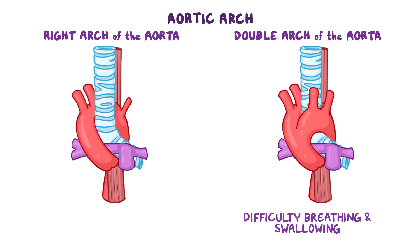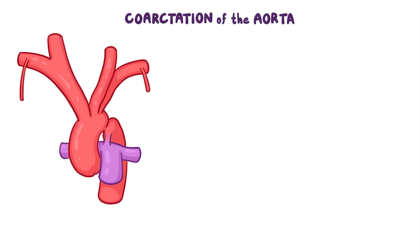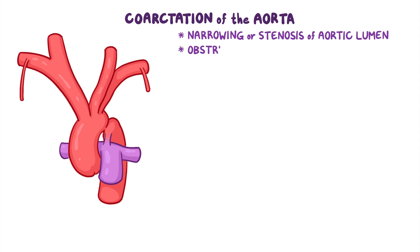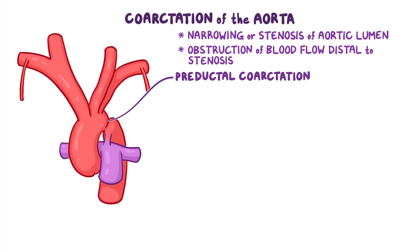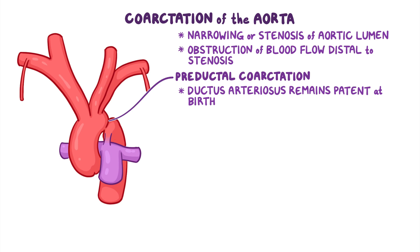The aorta can also be subject to coarctation of the aorta, which is when the aortic arch or thoracic aorta has an abnormal narrowing or stenosis of the aortic lumen. This causes an obstruction of blood flow distal to the stenosis and to the inferior part of the body. The most common site for a coarctation is near the ligamentum arteriosum. If the stenosis is proximal to the ductus arteriosus, also called pre-ductal coarctation, this can cause the ductus arteriosus to remain patent at birth instead of closing off to become the ligamentum arteriosum, ultimately allowing blood from the pulmonary trunk to bypass the stenosis.